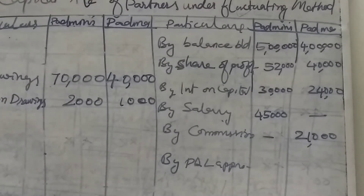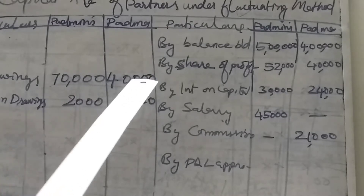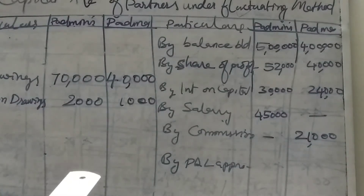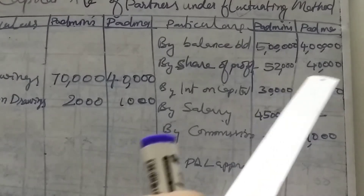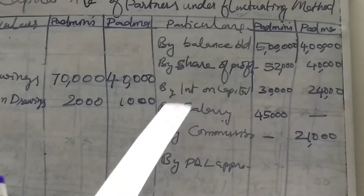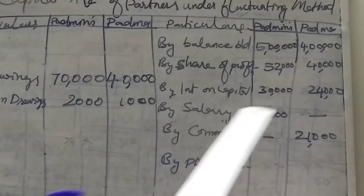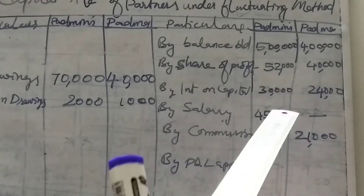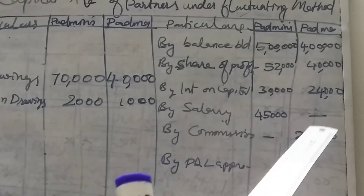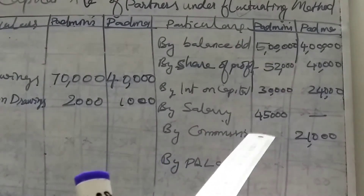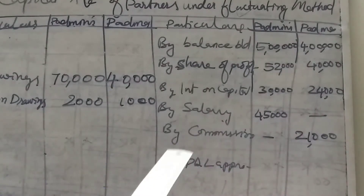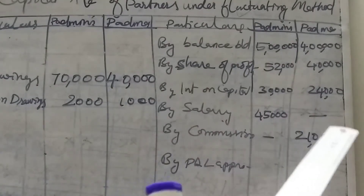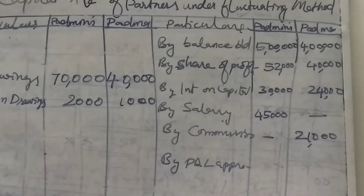Interest on drawings — that is also on the debit side: 2,000 and 1,000. Then what is the next item: share of profit — 52,000 and 40,000. Next, interest on capital: 30,000 and 24,000. Salary only for Padmini: 45,000; Padma: 0. Then for commission: Padmini 0, Padma 21,000. That is all items given in the question.